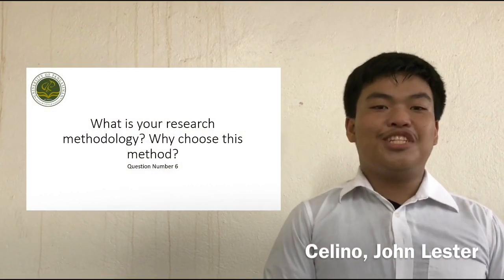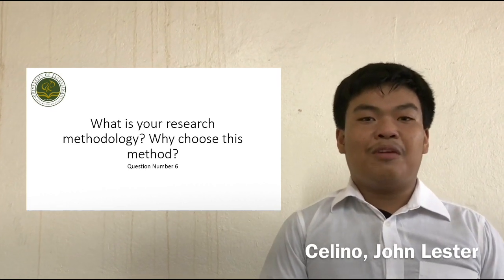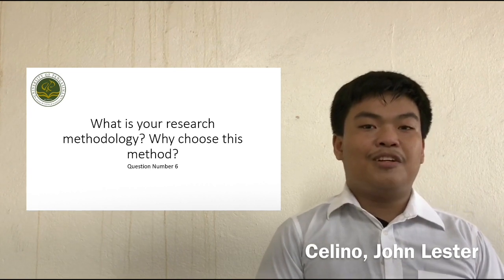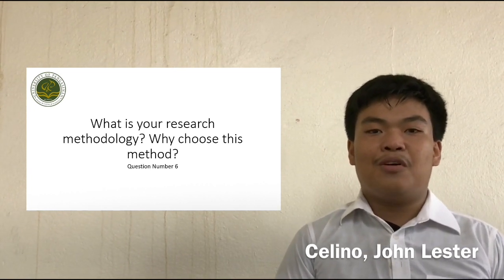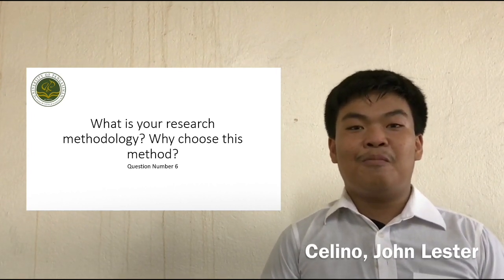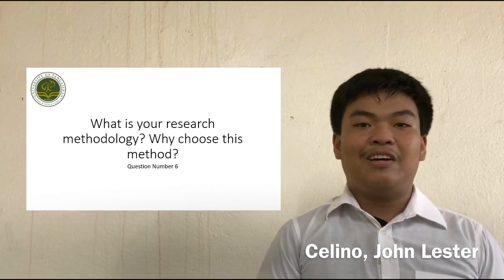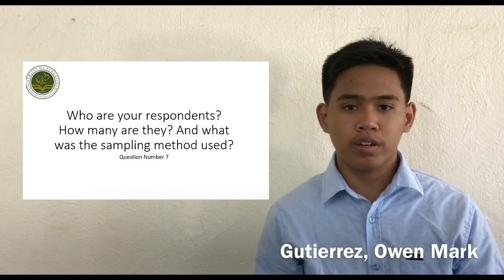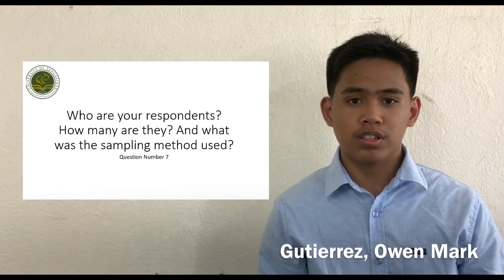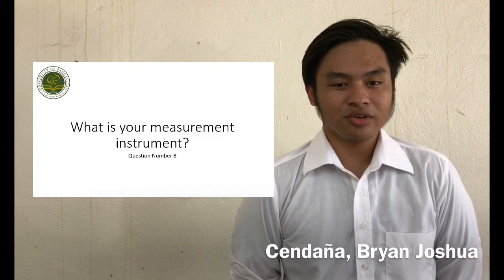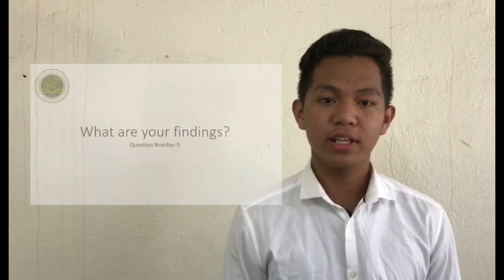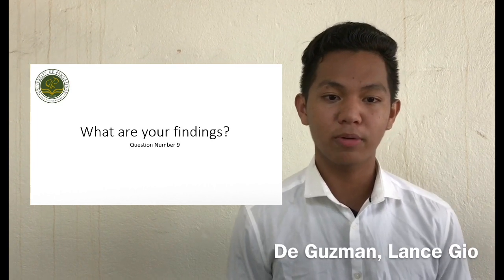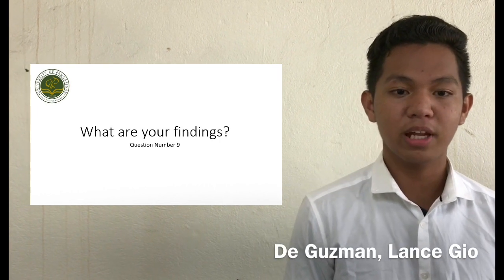For research methodology, the research design used was descriptive correlation to describe the relationship between the two variables. The data gathering instrument was a survey questionnaire composed of three parts: the profile of the respondents, the degree of financial problems, and the level of motivation. For statistical treatment, the study used frequency count, average weighted mean, and Pearson R. The respondents were 60 HK scholars selected through purposive sampling. Findings covered the profile in terms of sex, age, and monthly family income; the level of motivation; and the significant relationship and correlation between financial problems and the motivation of the respondents.